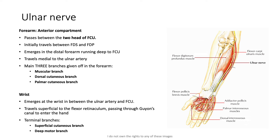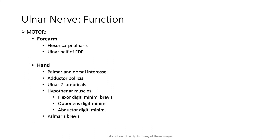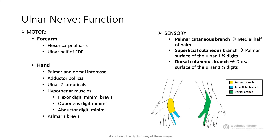At the wrist, the ulnar nerve emerges between the ulnar artery and flexor carpi ulnaris, travelling superficial to the flexor retinaculum and passing through Guyon's canal to enter the hand. It ends as two terminal branches: the superficial cutaneous branch and the deep motor branch. In the forearm it supplies flexor carpi ulnaris and the medial half of flexor digitorum profundus. In the hand it supplies the majority of intrinsic muscles: the palmar and dorsal interossei, adductor pollicis, the ulnar two lumbricals, the muscles of the hypothenar eminence, and palmaris brevis. Sensation is provided to the medial half of the palm via the palmar cutaneous branch, the palmar surface of the ulnar one and a half digits via the superficial cutaneous branch, and the dorsal surface of the ulnar one and a half digits via the dorsal cutaneous branch.